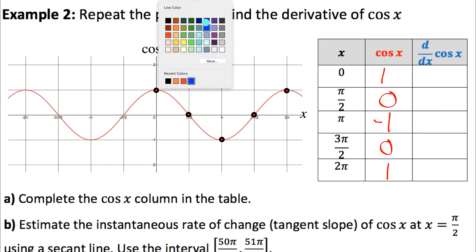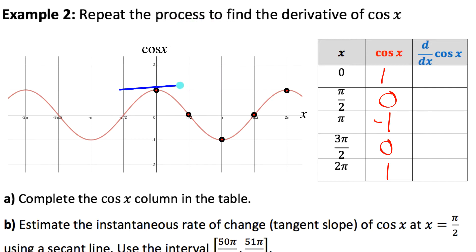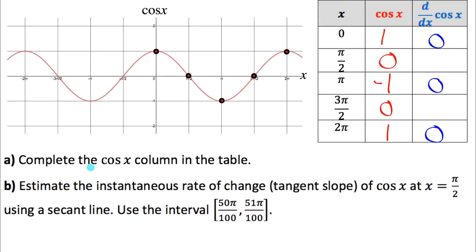A tangent line can represent those slopes. Drawing tangent lines at x values of zero, pi, and two pi, those tangent lines are clearly all horizontal, which tells me the slope of cosine is zero at all of those points. So the derivative equals zero at each of those x values. Now, part b asks us to estimate the instantaneous rate of change of cos x at x equals pi over two, meaning we want to estimate the slope of the tangent line at that point — using the same secant line approach.